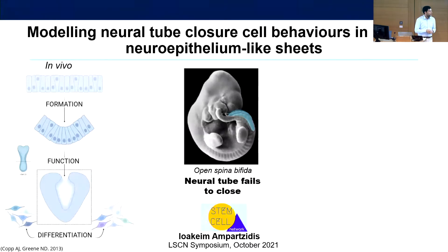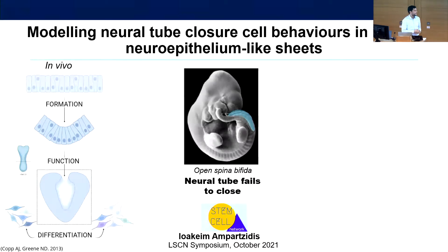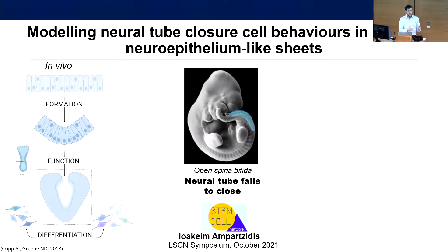Here we can see a mouse embryo with an open spinal region of the neural tube, which is termed open spina bifida. This presentation is timely, as this week is Spina Bifida Awareness Week. Our lab and others have previously shown that quantifiable biomechanical abnormalities result in failure of neural tube closure — for example, failure of apical constriction gives rise to spina bifida.